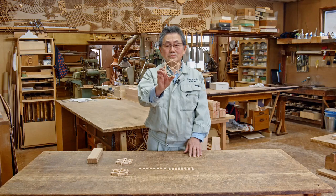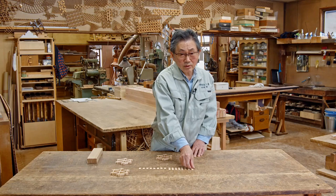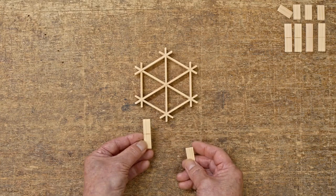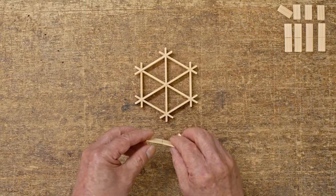We will now begin inserting Kumiko pieces called a hemp leaf into the completed hexagon. We have two types of Kumiko: longer and shorter pieces.